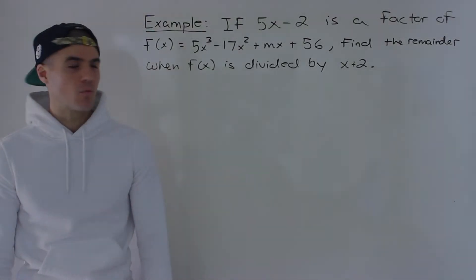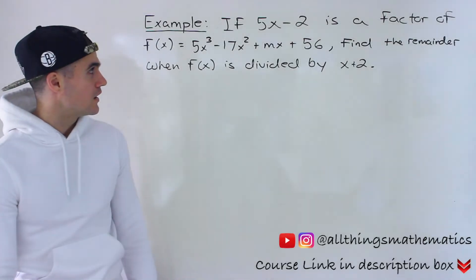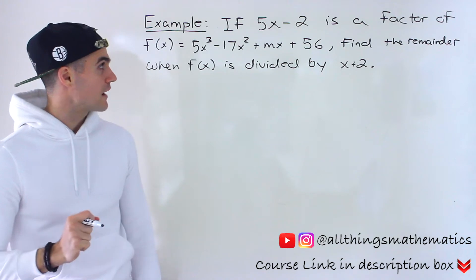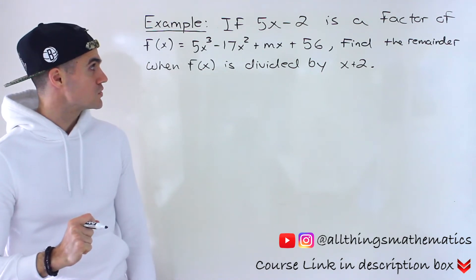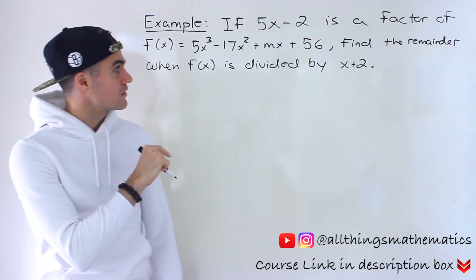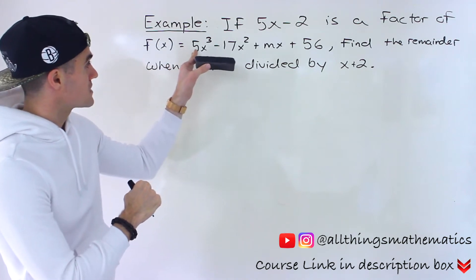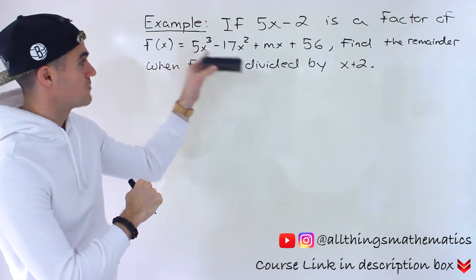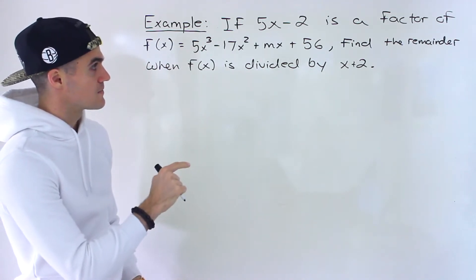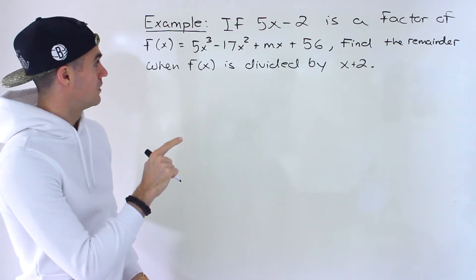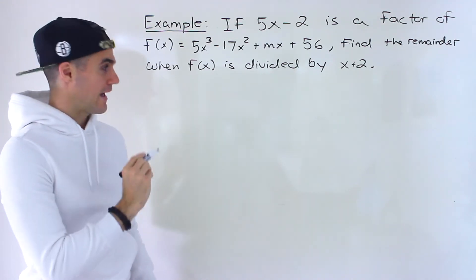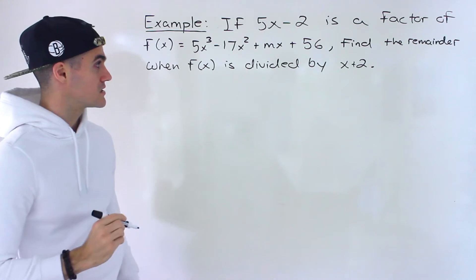What's up everyone? Patrick here. Welcome back. Moving on to another question dealing with the remainder and factor theorem. We're told 5x minus 2 is a factor of the polynomial f(x) equals 5x cubed minus 17x squared plus mx plus 56. We have to find the remainder when f(x) is divided by x plus 2.